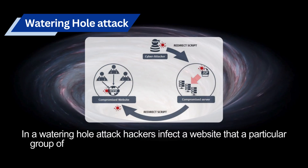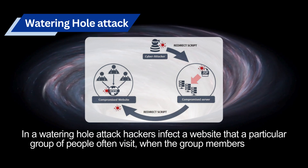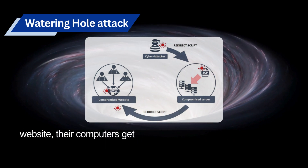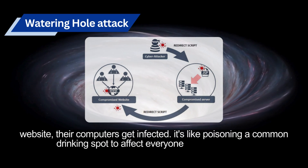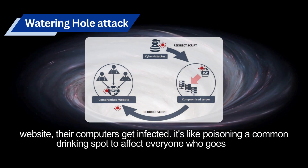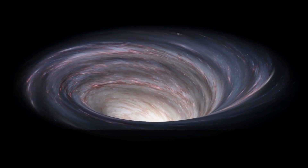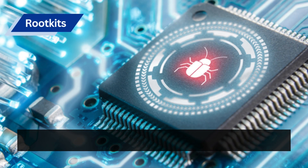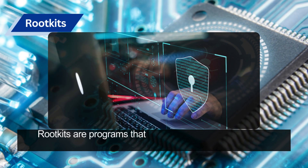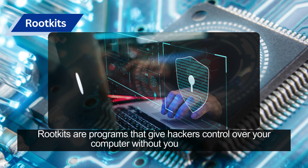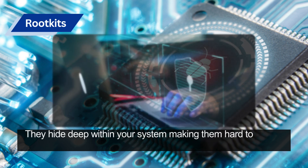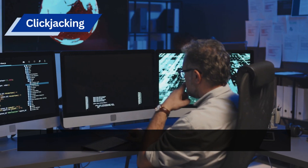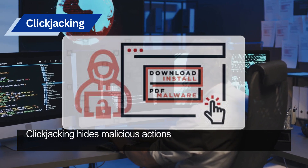In a watering hole attack, hackers infect a website that a particular group of people often visit. When group members visit the website, their computers get infected — like poisoning a common drinking spot to affect everyone who goes there. Rootkits are programs that give hackers control over your computer without you knowing, hiding deep within your system and making them hard to detect.